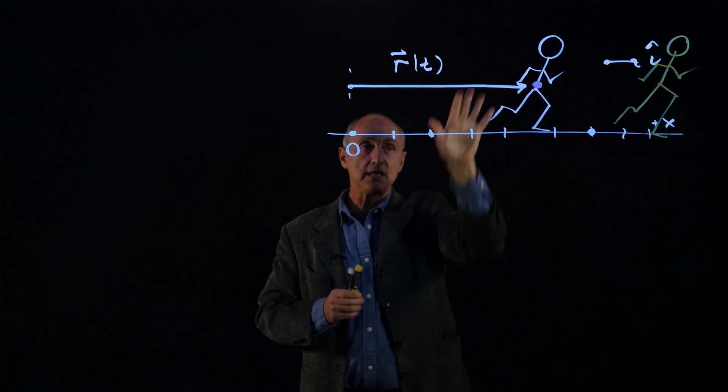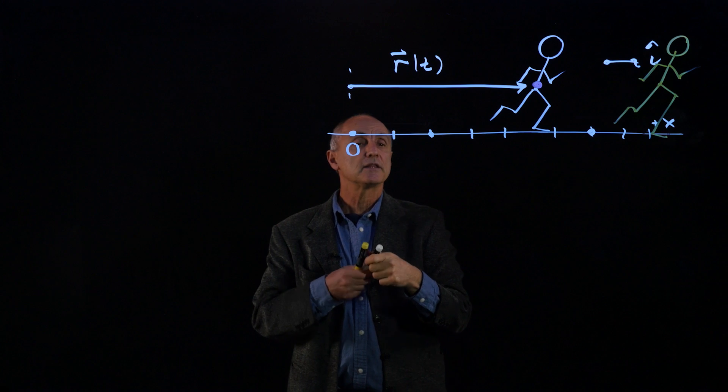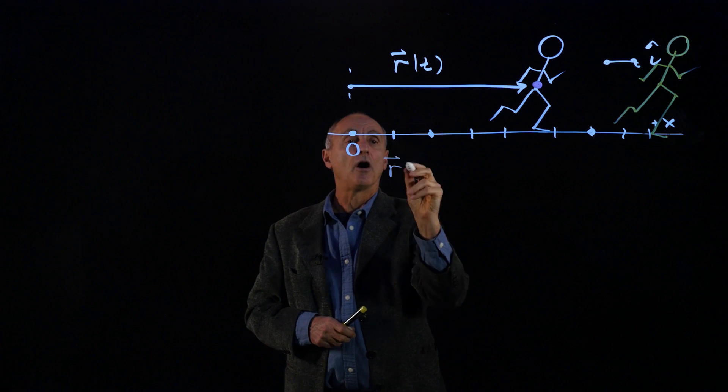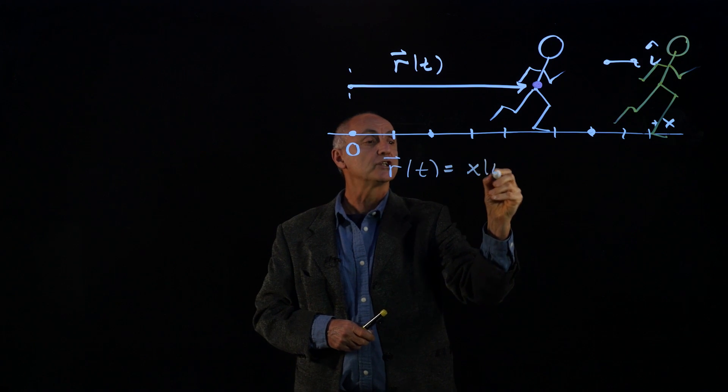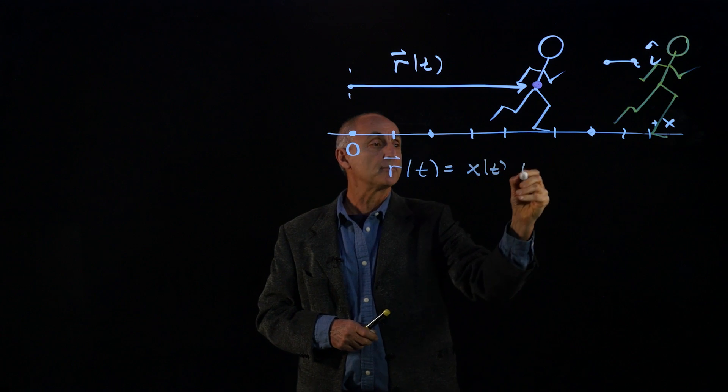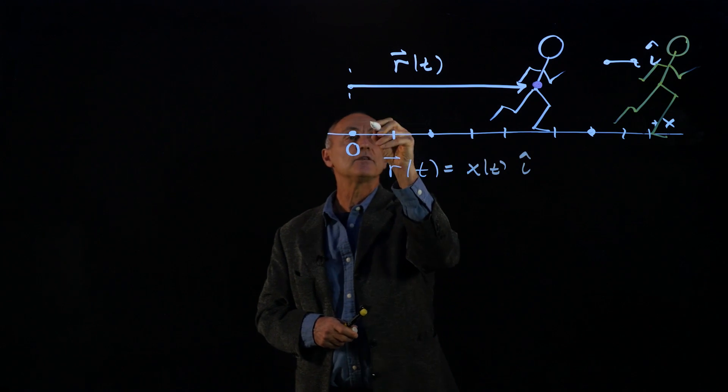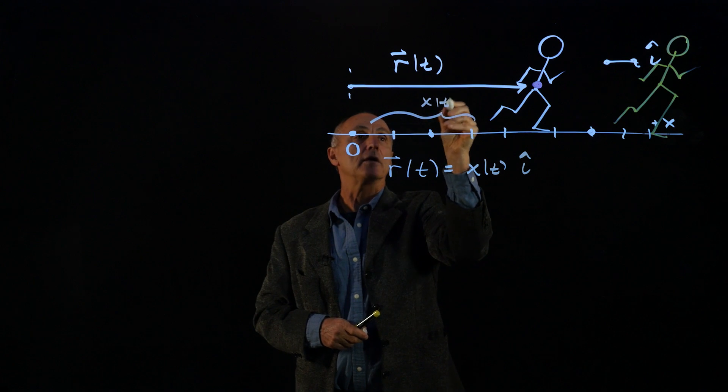Remember, at time t, we described the position vector r(t) was equal to the coordinate function x as a function of time, î. And this distance here was our x(t).